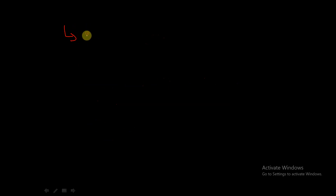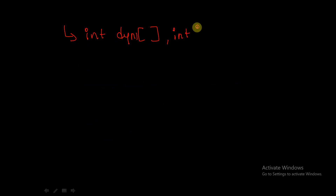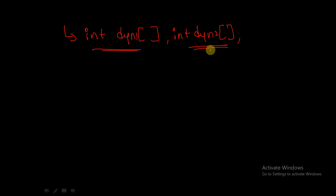Let's declare two dynamic arrays of int data type: int dyn1 and int dyn2. So these are my two dynamic arrays — one is dyn1 and another is dyn2. I am declaring two dynamic arrays of int data type.